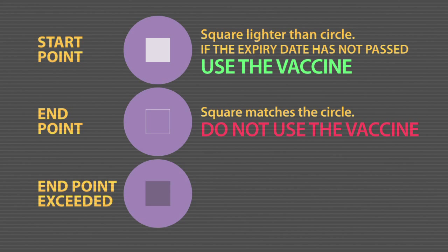The colour change inside the square will continue and become darker than the colour of the circle. The vaccine has largely exceeded its end point and cannot be used.